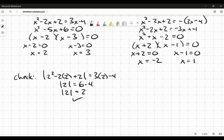So 2 works. Now let's try 3 squared minus 2 times 3 plus 2 equals 3 times 3 minus 4. I've got 9 minus 6, which is 3, plus 2 is 5. So it's the absolute value of 5. This is 9 minus 4. Does the absolute value of 5 equal 5? Yes, that works.